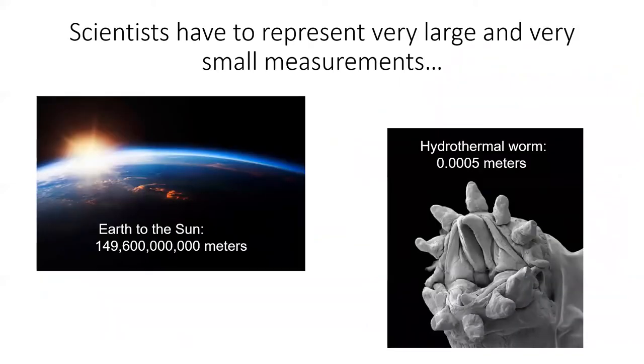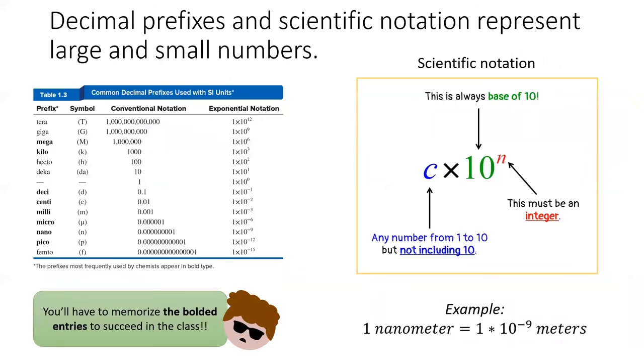One of the coolest parts about sciences is its scale. From the very large to the very small, we have scientists studying it. So naturally scientists need a way to represent gigantic and teeny tiny measurements. We have two ways of doing this: decimal prefixes and scientific notation.